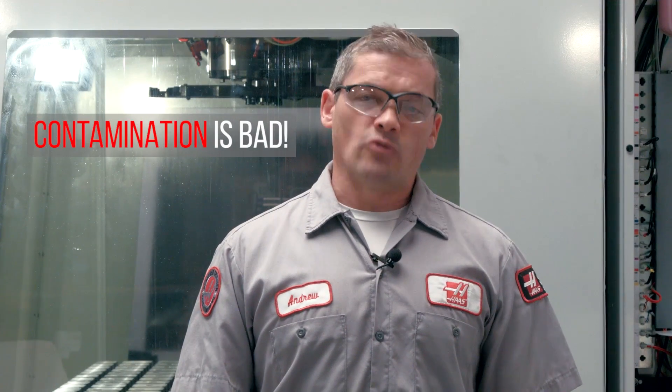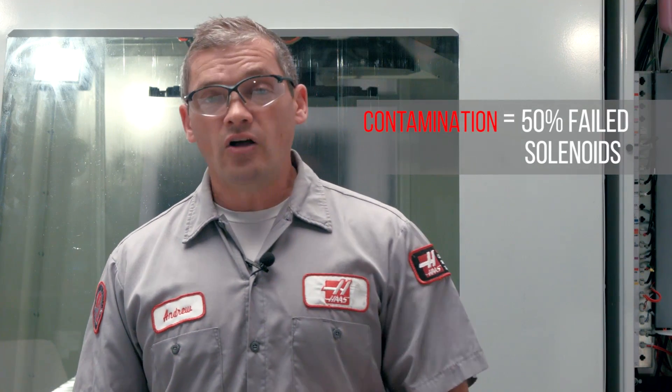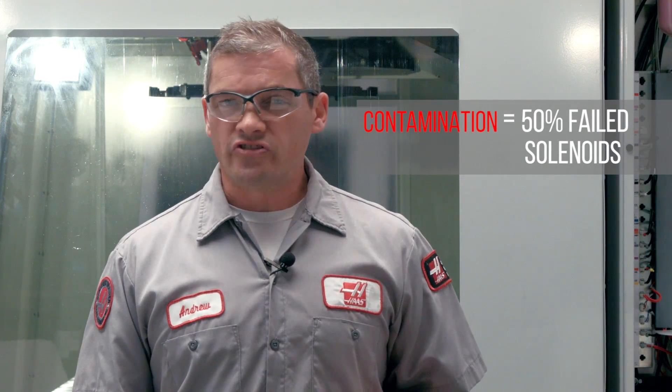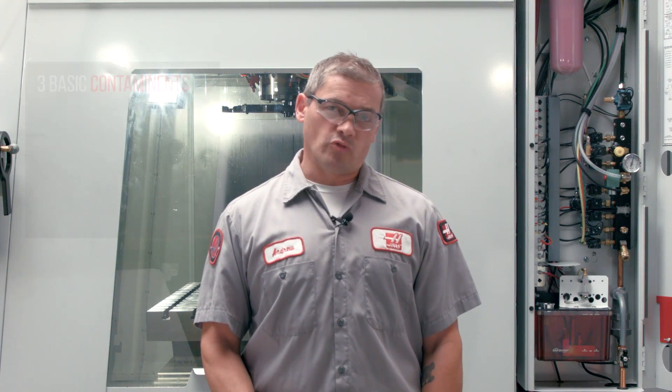But before we get started with that we're going to stop and take a detour to discuss what's maybe the most important part of this video. And what's that you might ask? Contamination is what we're talking about. Based on returned solenoids that Haas receives, at least 50% of all solenoid failures are due to some form of contaminated air. And there are three basic contaminants we're talking about here: oil, water, and particulate.